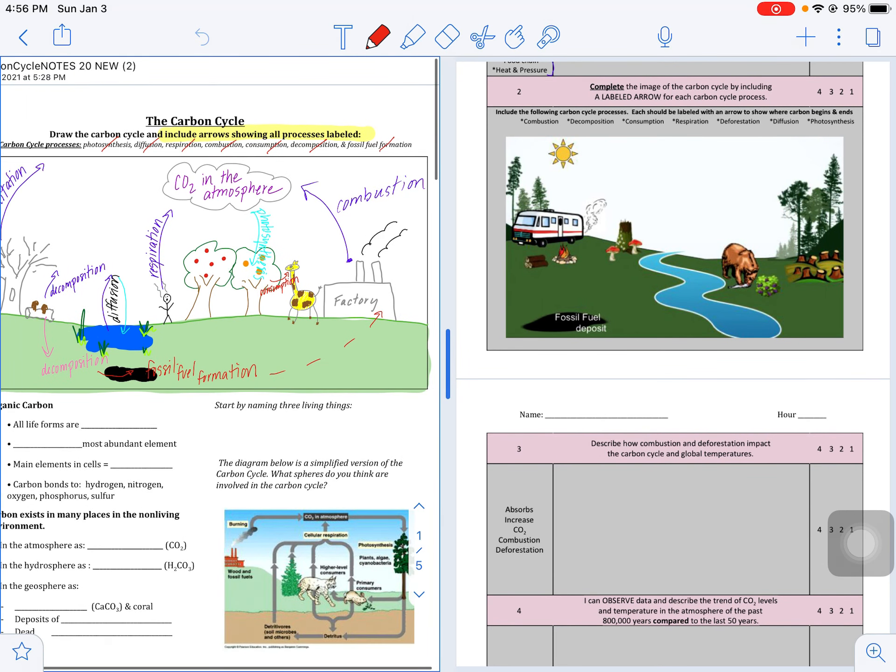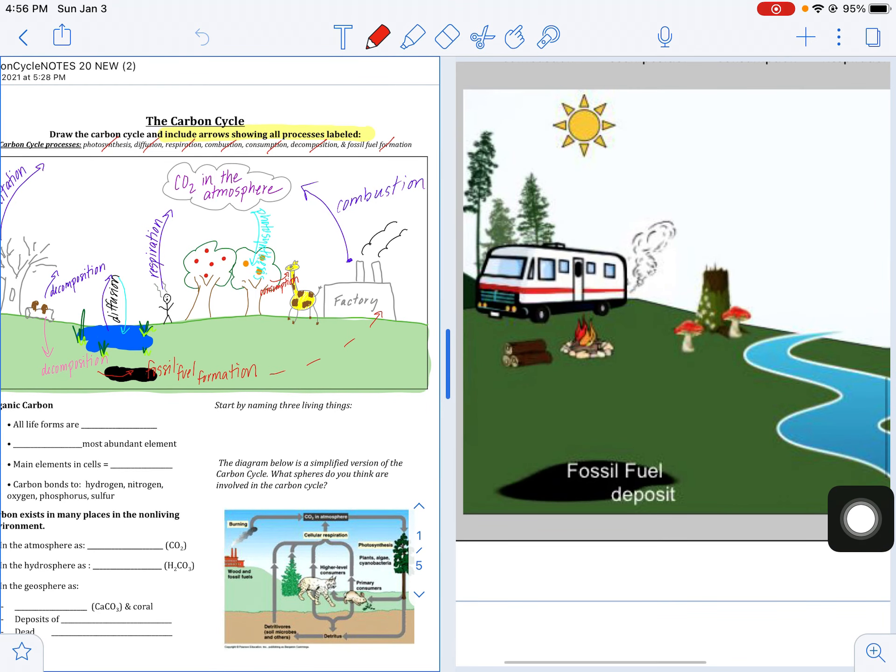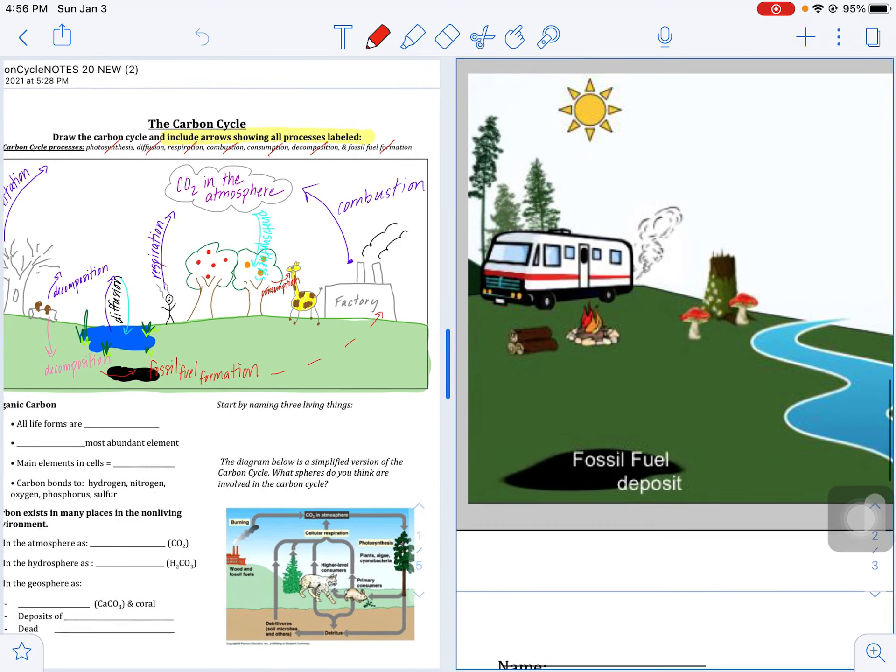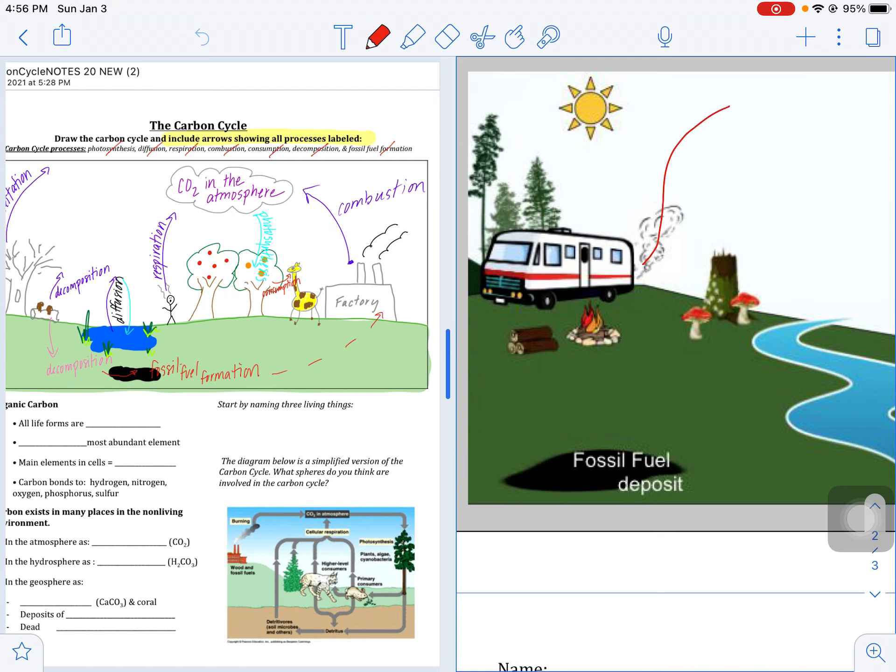The first one here is combustion. On our notes picture, that was burning of fossil fuels in this factory releasing it into the atmosphere. Now we don't have a factory here, but we do have a spot where fossil fuels are being burned, so hopefully your eyes are directed to the motorhome. So we can get our combustion arrow putting carbon up into the atmosphere.